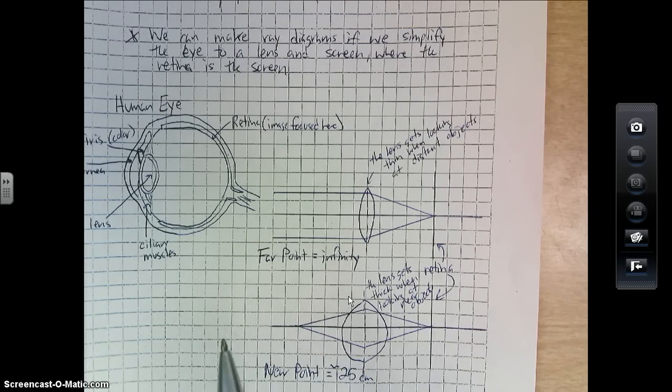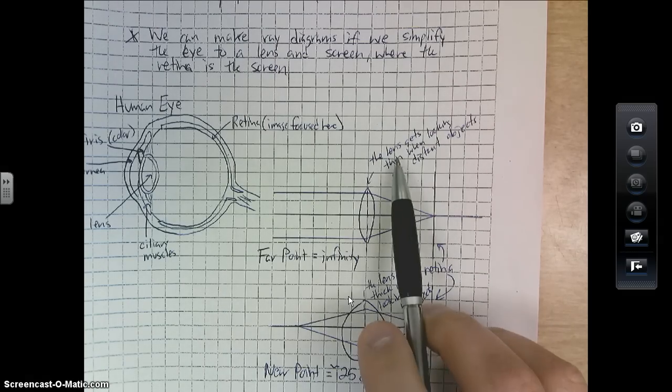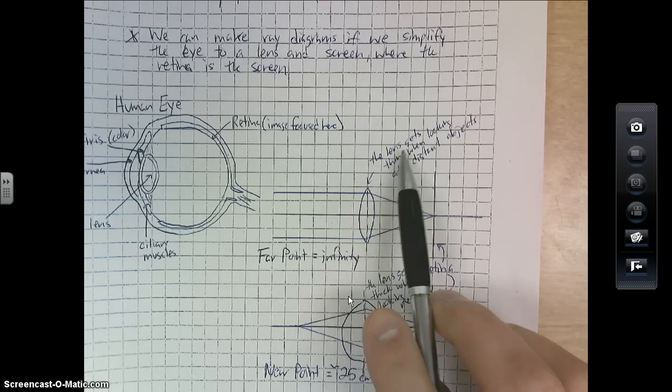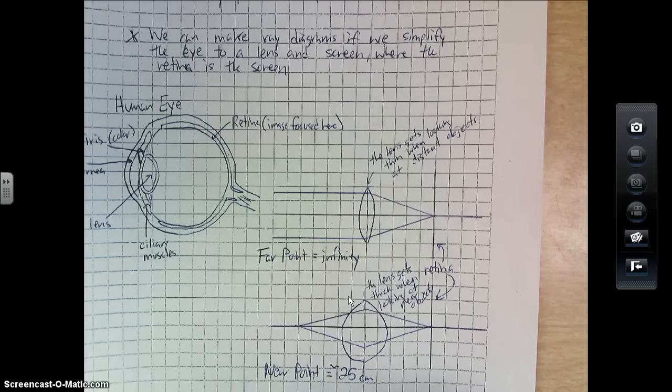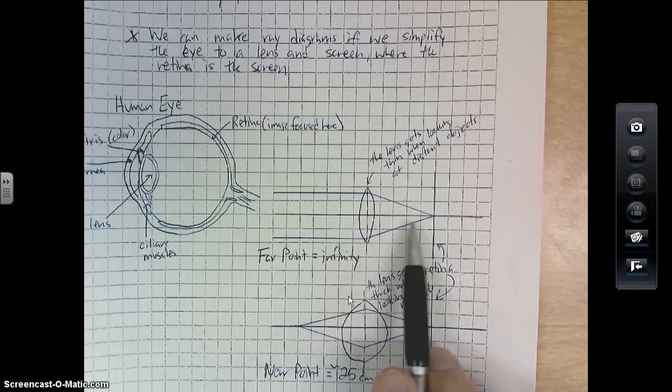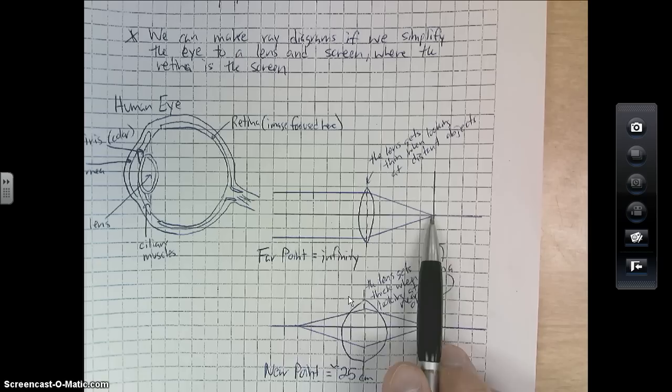They don't come in at an angle. What happens in that case, when something's very far away, is that the lens is actually very thin, and they focus it directly onto your retina.